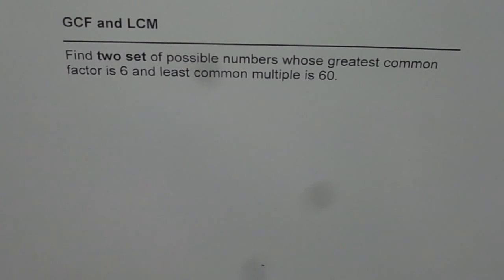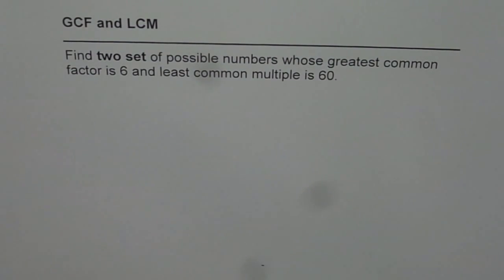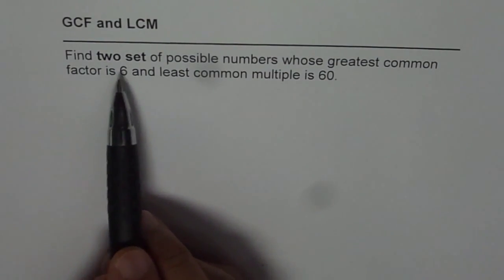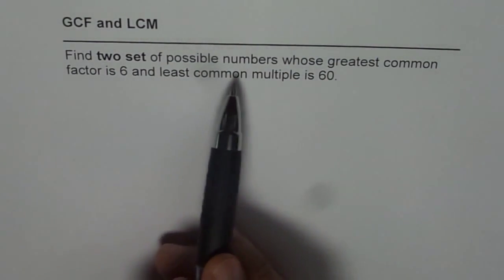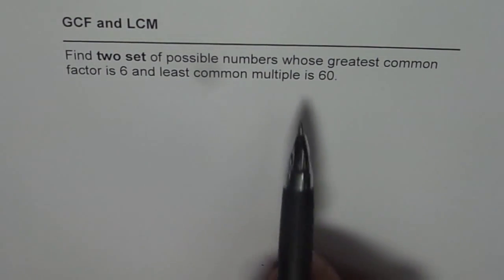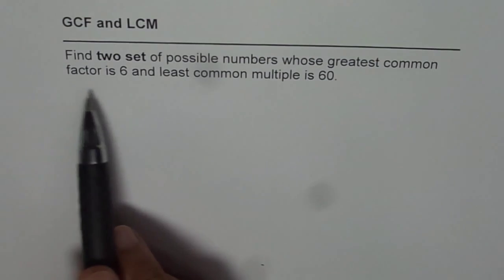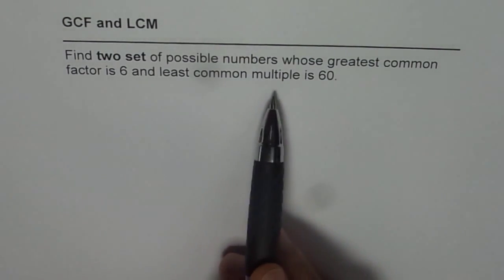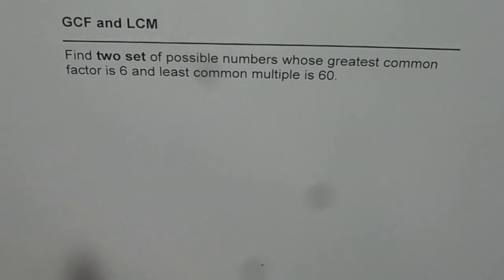I am Anil Kumar, and in this video I will teach you the relationship between greatest common factor and least common multiple. The question is: find two sets of possible numbers whose greatest common factor is 6 and least common multiple is 60.